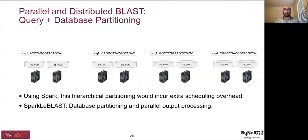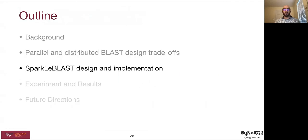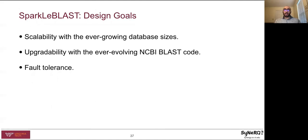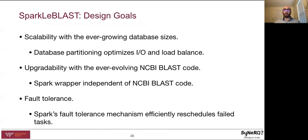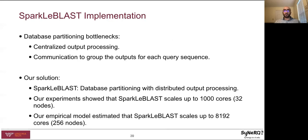For this reason, in Sparkle BLAST, we selected database partitioning with parallel output processing. Sparkle BLAST design goals consist of achieving scalability with the ever-growing database sizes, upgradability with the ever-evolving NCBI BLAST code, and fault tolerance. Scalability is achieved through database partitioning to optimize IO and load balance. Upgradability is achieved by implementing a Spark wrapper around NCBI BLAST code without changing it, enabling switching between NCBI BLAST versions without programming effort. Fault tolerance is achieved by leveraging Spark's fault tolerance, which efficiently reschedules failed tasks on a large-scale distributed system. To solve the bottlenecks of database partitioning shown by previous research — centralized output processing and communication overhead — we implemented parallel output processing.